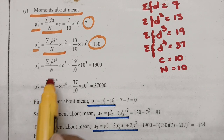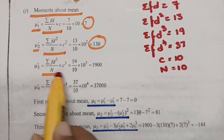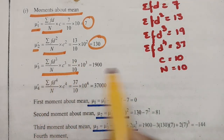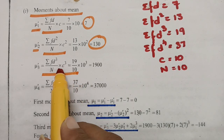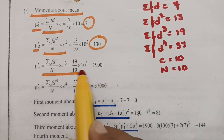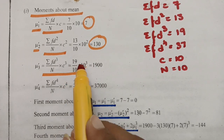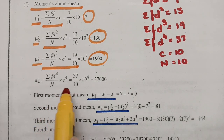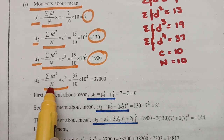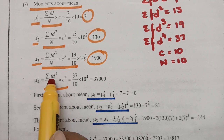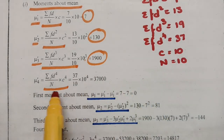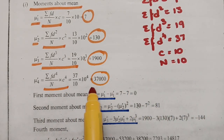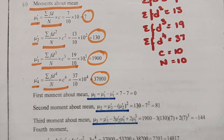The third raw moment: μ₃' = (Σfd³ / n) × c³ = (19/10) × 1000 = 1900. The fourth raw moment: μ₄' = (Σfd⁴ / n) × c⁴ = (37/10) × 10000 = 37000.